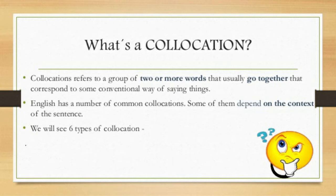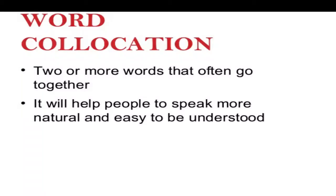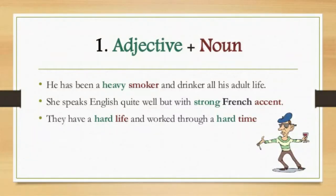English has a number of common collocations, and we are going to see six types of collocations. In simple terms, a collocation is an arrangement of words or other elements — it is the act of occurring side by side. When we start doing the examples, you will understand better.